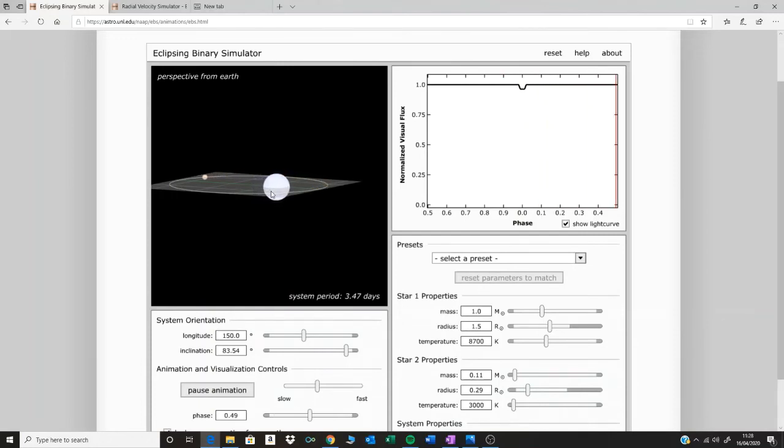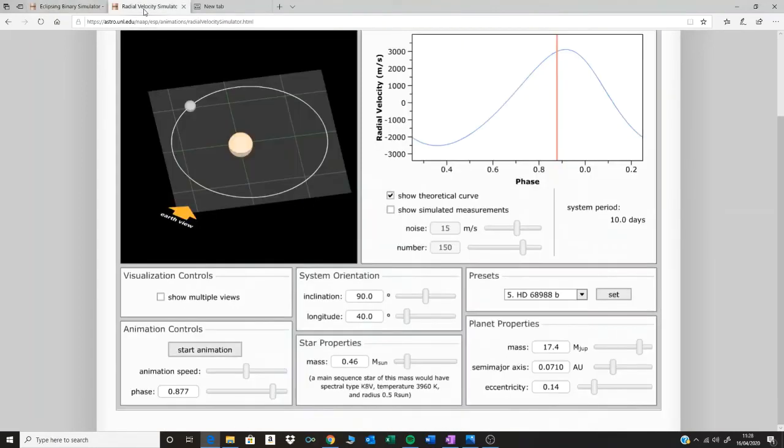And because the planet is absorbing some of the light, we get this short, tiny drop in brightness. But that gives us information about the orbit.